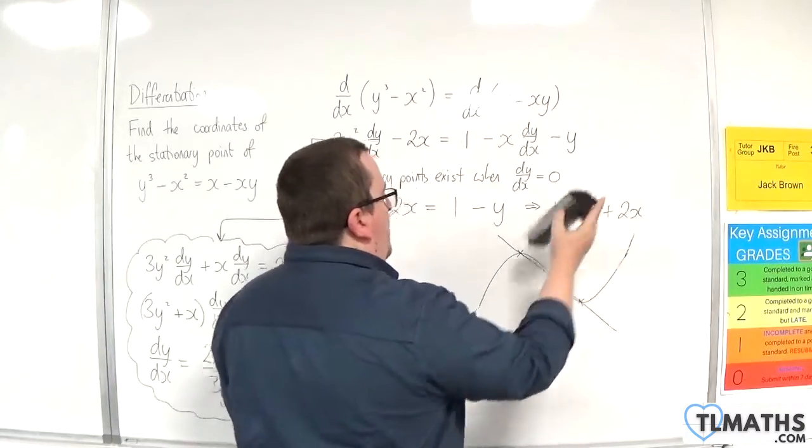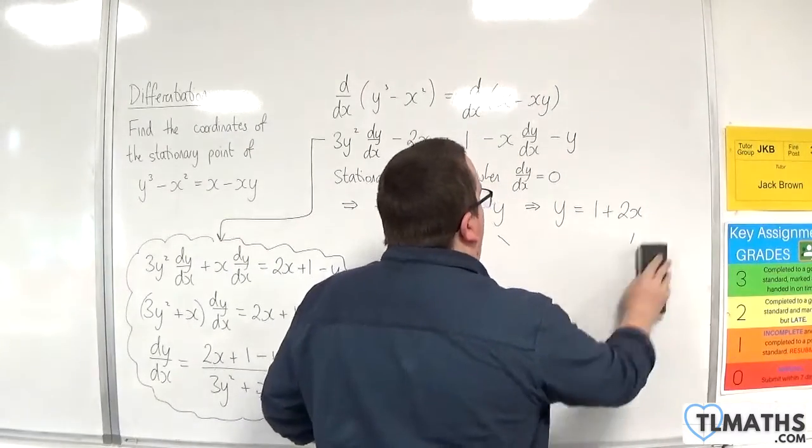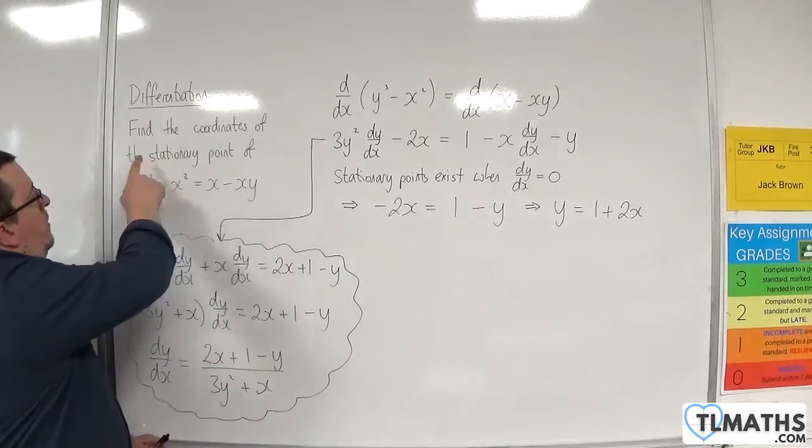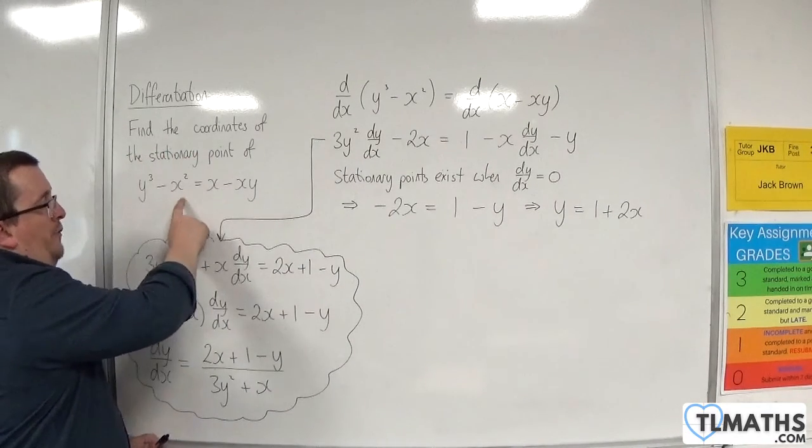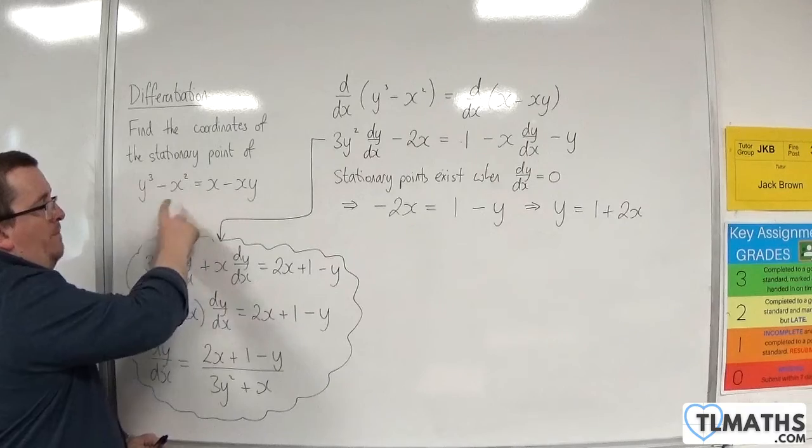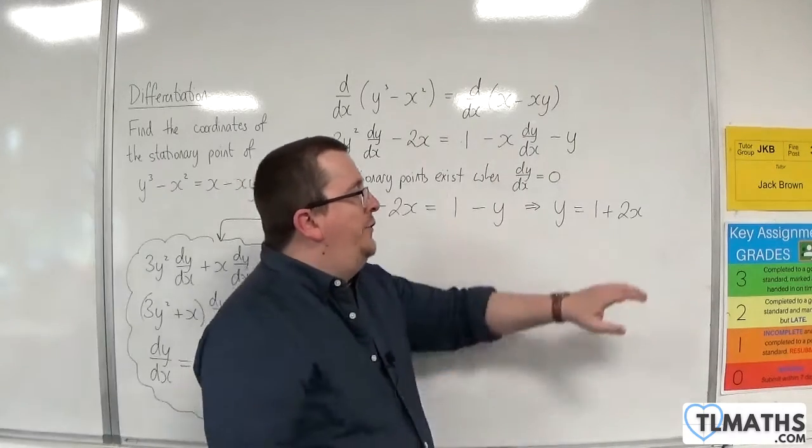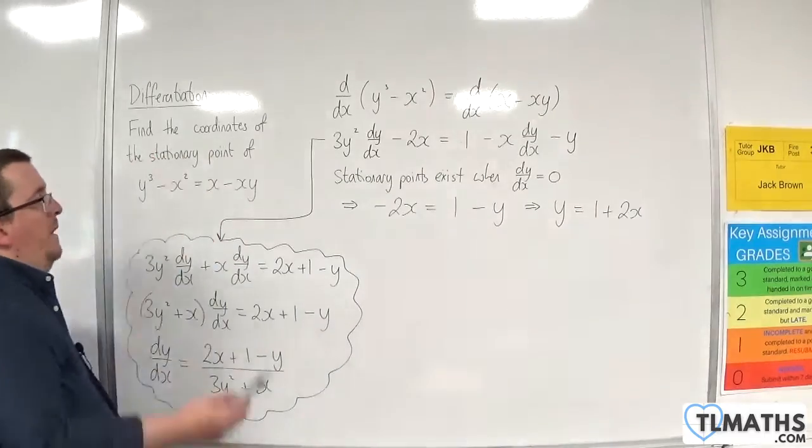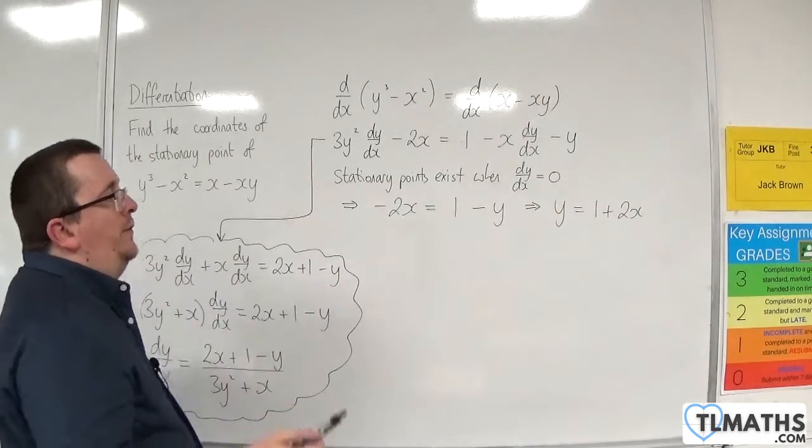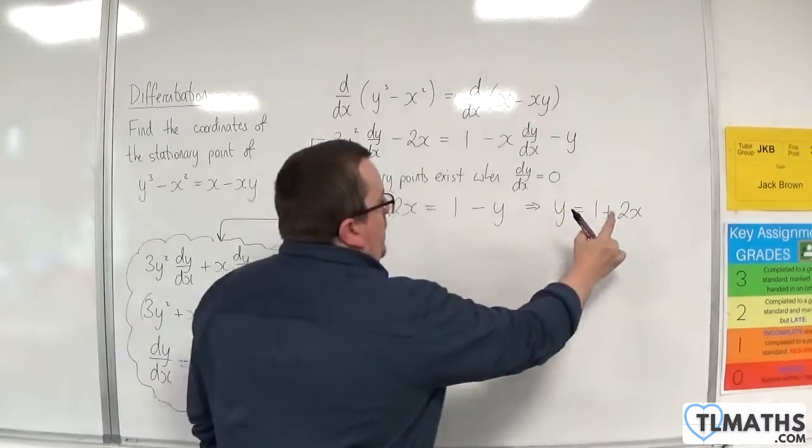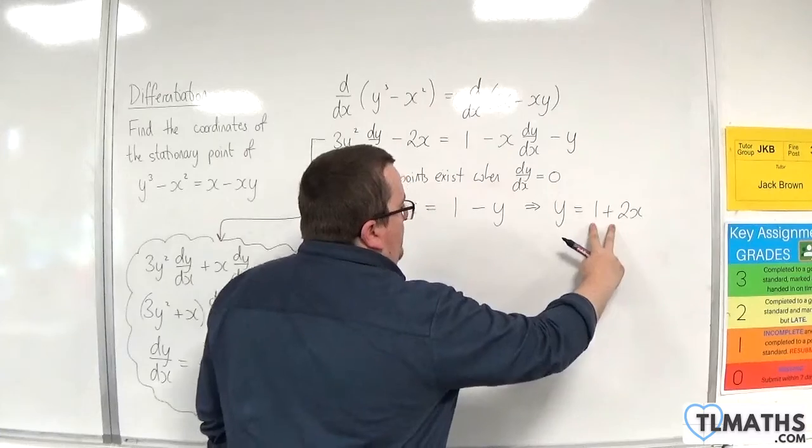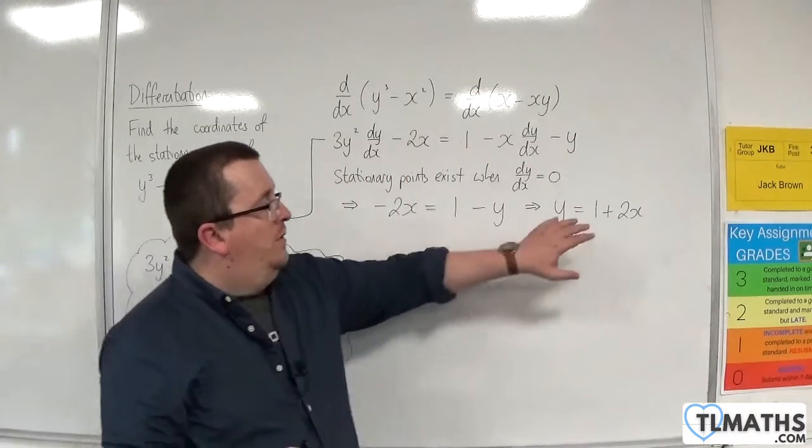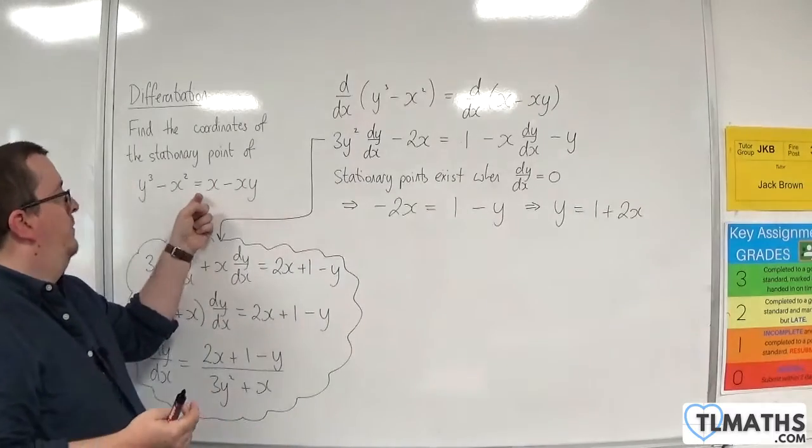That's what that line represents. Now, for us, for our problem, 1 + 2x, there is a single stationary point for this curve. So, that single stationary point lies on that line. So, how do I now work out where it is? Well, we want to know where this line intersects the original curve. So I substitute this into this here.